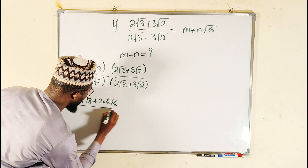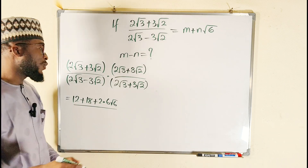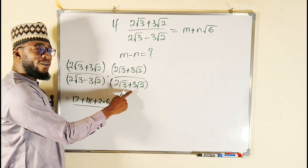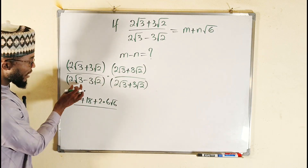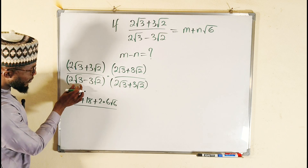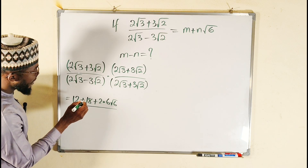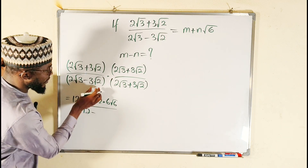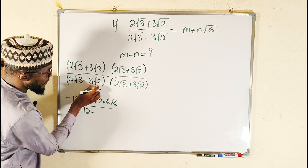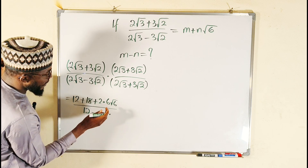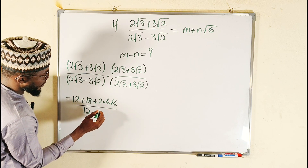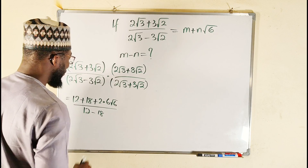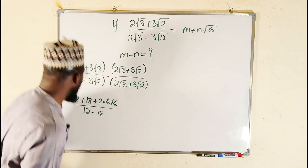The bottom is going to be a difference of two squares — we have minus and plus. You take the first term and square it, that gives us 12. Minus the second term squared, that gives us 18.